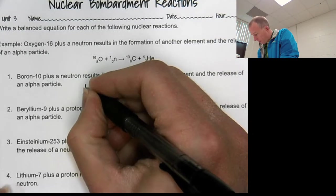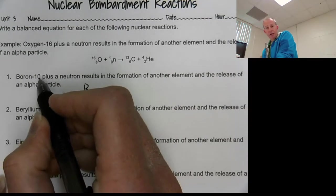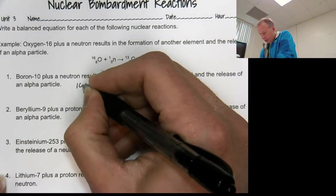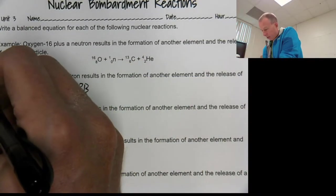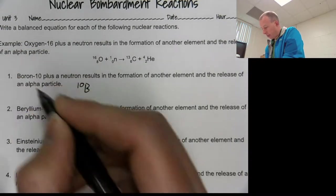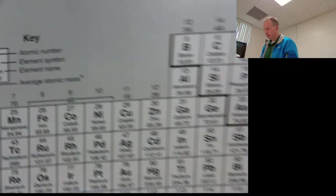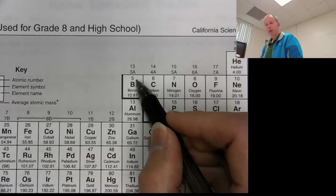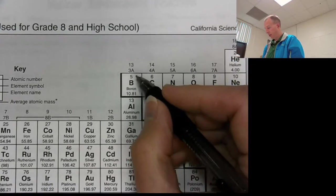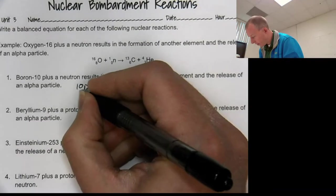So we've got boron. Now, remember this thing here, this 10, that's the mass number. Remember on top, we have protons plus neutrons. That's our mass number. The bottom thing that we write is just our protons. Now, do you know how many protons boron has? I'm guessing you might not have that memorized. It's five. So you can look it up on the periodic table. So we're going for five down there.